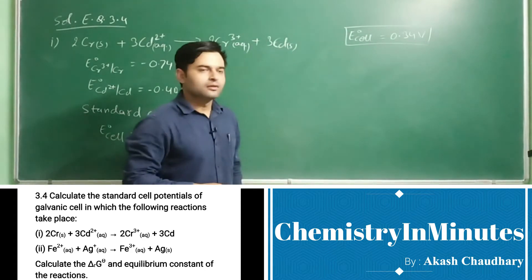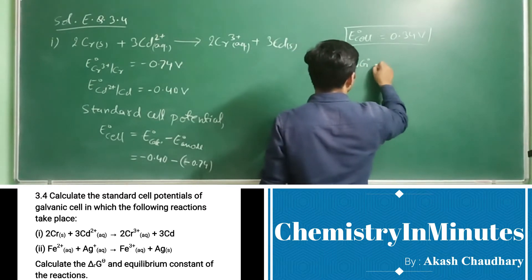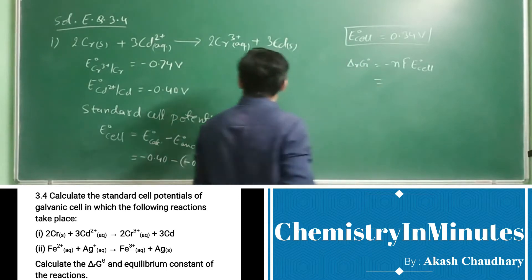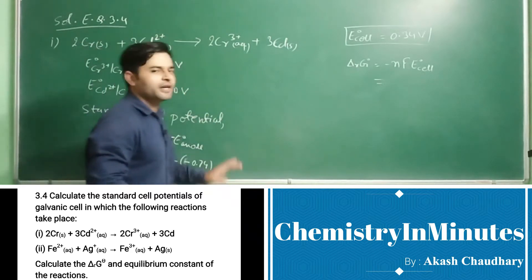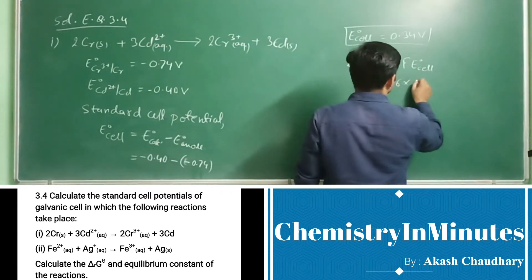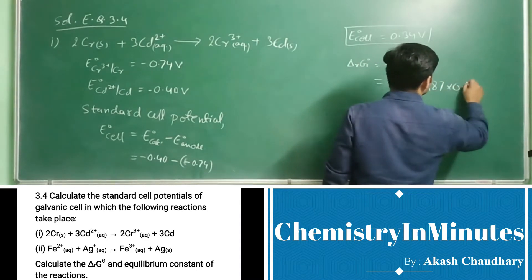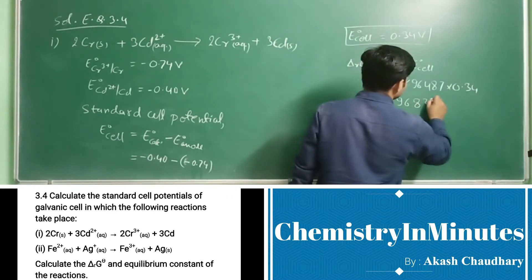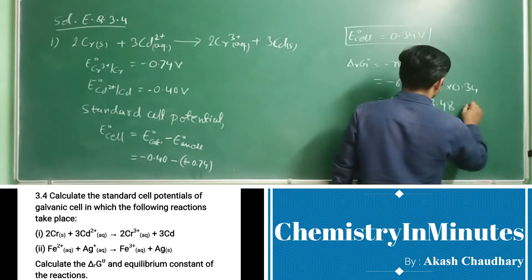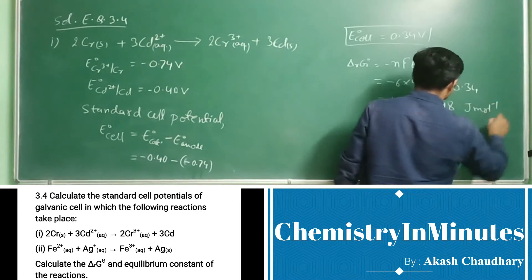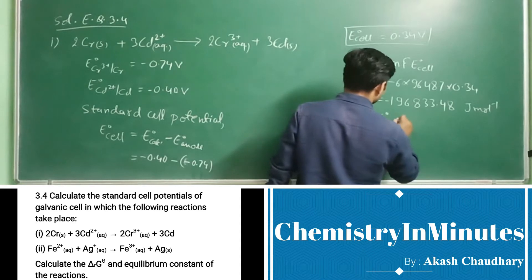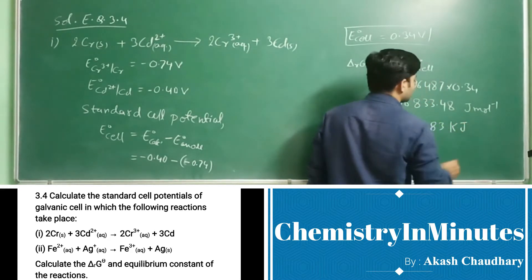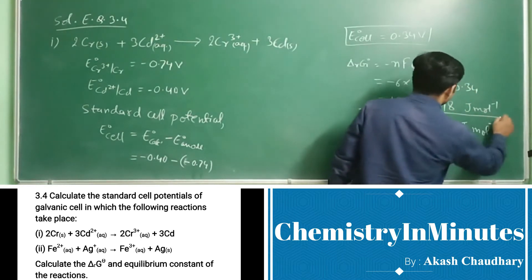Now for the ΔRG⁰ value. ΔRG⁰ = −nFE⁰cell, where n is the number of electrons transferred in the redox reaction. For this reaction, n = 6. So ΔRG⁰ = −6 × 96487 × 0.34 = −196,833.48 J/mol, which can be written as ΔRG⁰ = −196.83 kJ/mol.